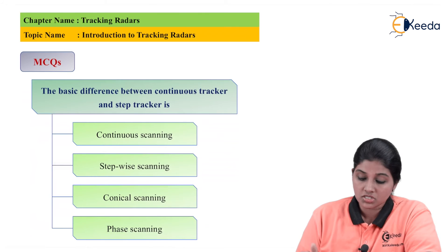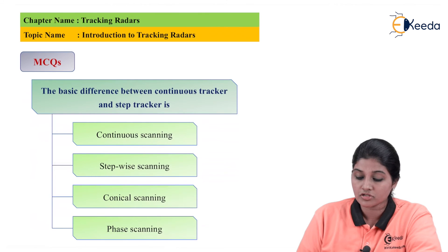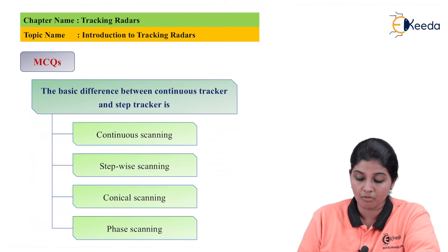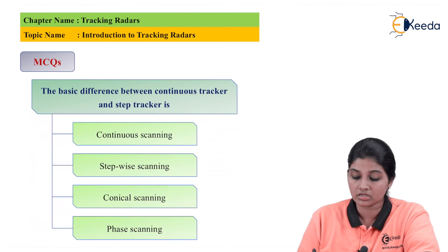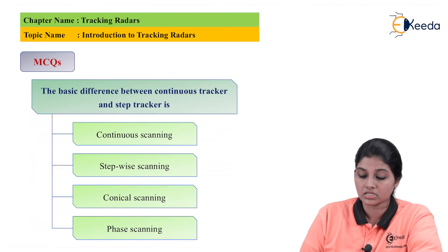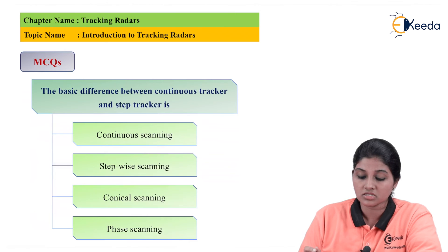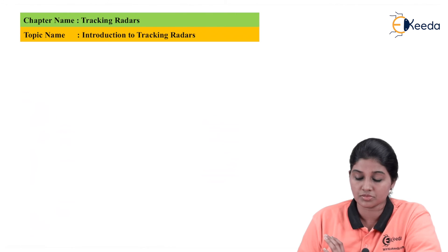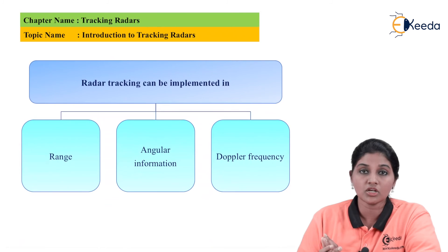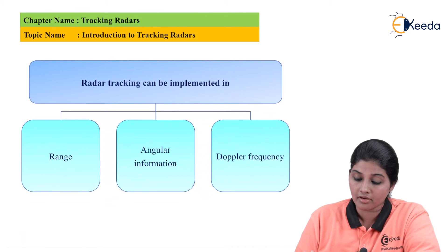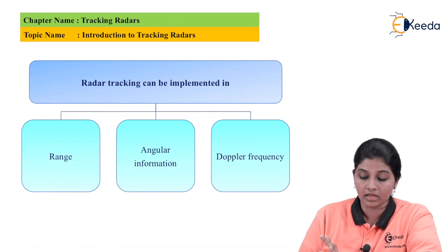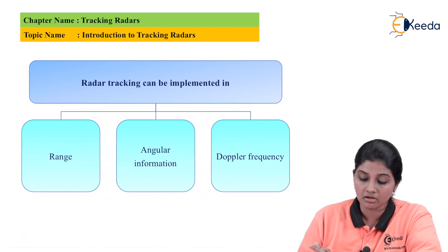The first question is: what is the basic difference between continuous track and step track? The options are continuous scanning, stepwise scanning, conical scanning, and phase scanning. The answer is continuous scanning — that is the basic difference between continuous tracking and step tracking.